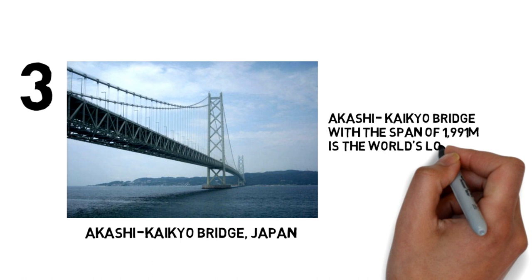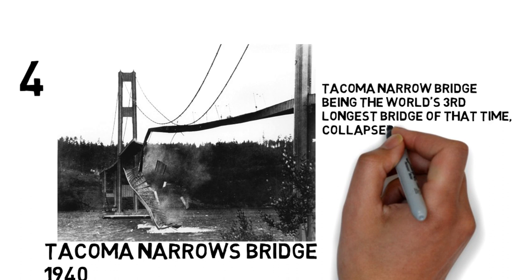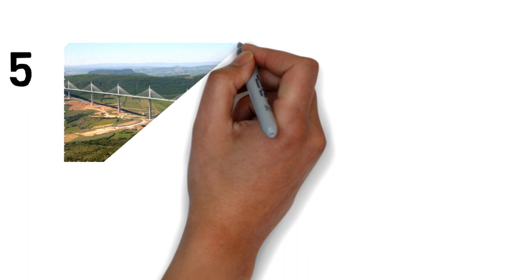Number four: the Tacoma Narrows Bridge, being the world's third longest bridge at that time, collapsed because it was made far too flexible, and it could have been prevented by making the deck thicker. Number five: the Millau Viaduct bridge is the world's tallest bridge with a structure height of 343 meters.